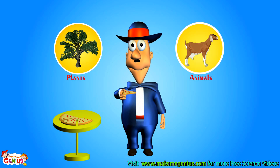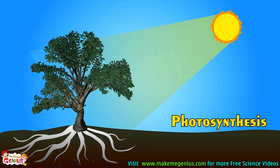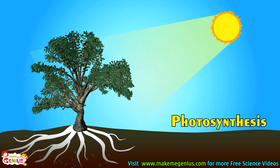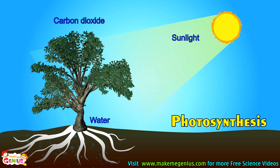We humans get all our food from animals and plants. Let me tell you more about food. Plants are the only living species who make their own food. They use sunlight, carbon dioxide from air, and water from soil to make their food. This process is called photosynthesis.